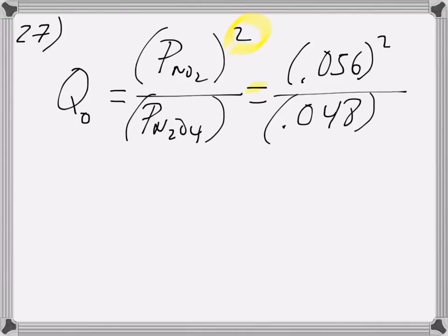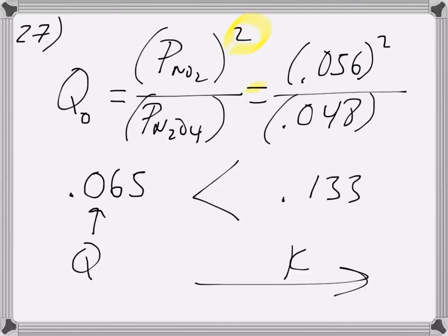If you do the math really quickly you would get the following. If you need to pause you can, but I got 0.065 when I did this, and then I compared that to the K, which was given in the problem. The K is 0.133, and we notice that Q is less than K, which means for this equation the products will be favored, and it's probably likely to go forward.